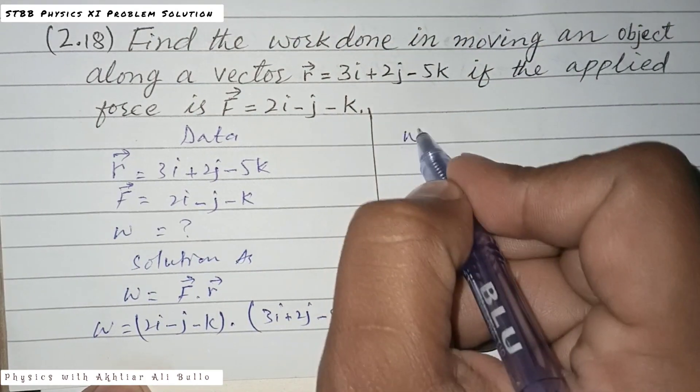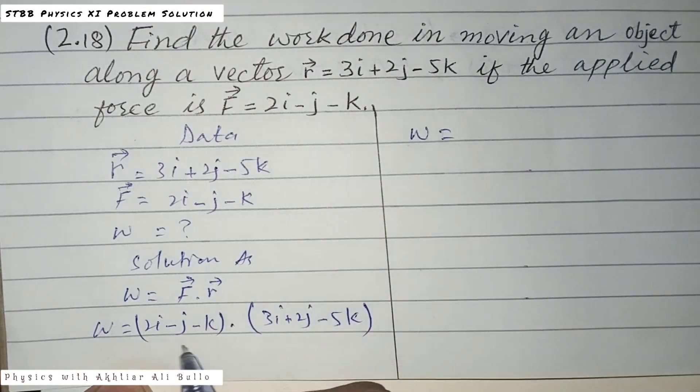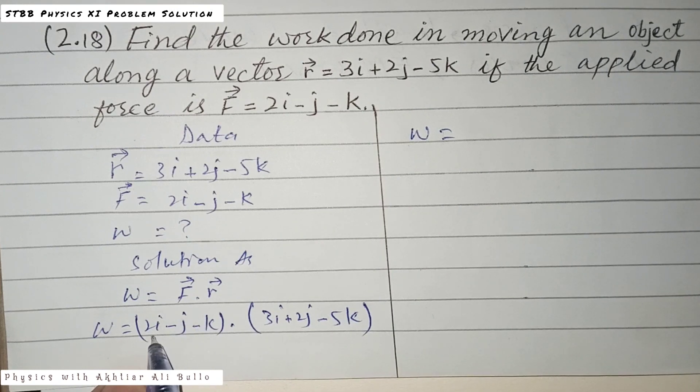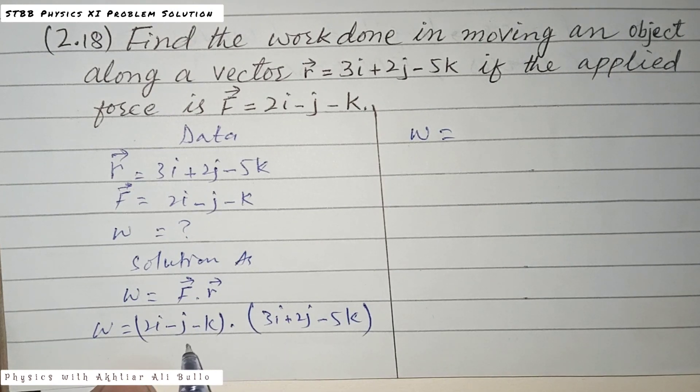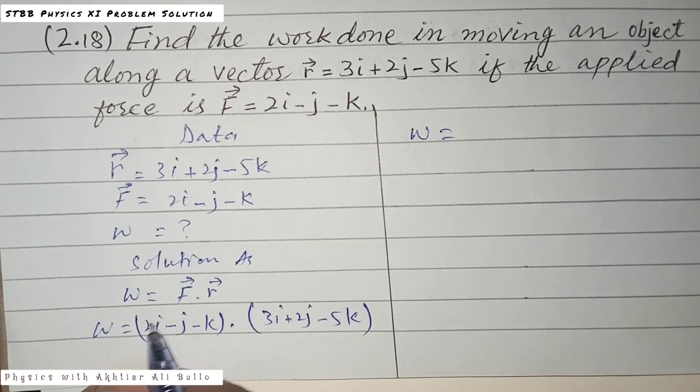The work done will be obtained by multiplying the values of i with i, j with j, and k with k.